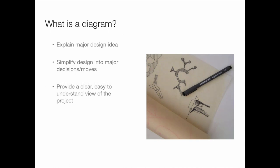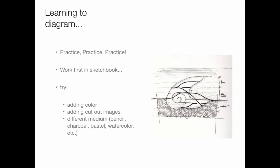So what fundamentally is a diagram in the first place? A diagram is your major idea—the big thing you want to come across. The easiest way to explain it is like a one-liner joke: there it is, boom, this is everything. You're trying to distill that major idea into a really simple way to understand. It should be clear and easy to understand. All too often people make diagrams too complicated—it really is about that fundamental big idea.